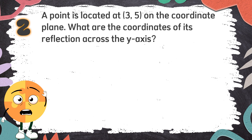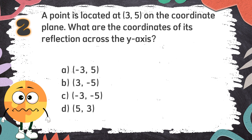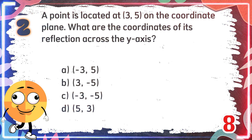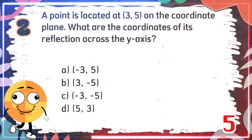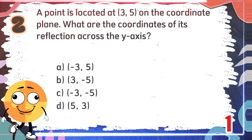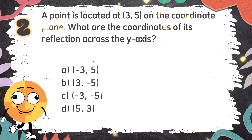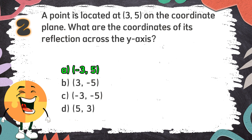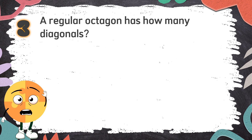Number 2: A point is located at (3, 5) on the coordinate plane. What are the coordinates of its reflection across the y-axis? The choices are: A. (-3, 5), B. (3, -5), C. (-3, -5), D. (5, 3). The correct answer is A, negative 3, 5.